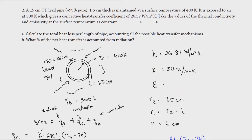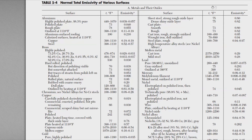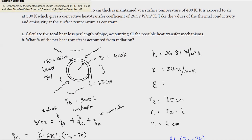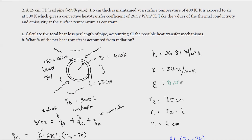If the temperature had been between the tabulated values, such as at 300°F, we would interpolate between 0.057 at 260°F and 0.075 at 440°F. Since our surface temperature corresponds to the lower bound at 400 K, the emissivity ε = 0.057 (dimensionless).